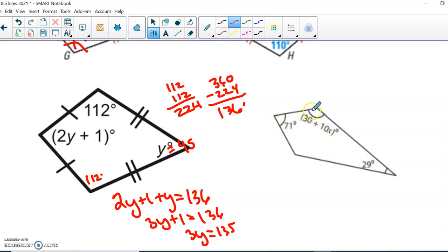All right. Over here, again, this angle is congruent to this angle, so I'm going to call this angle 30 plus 10x. And let's go ahead and add 71 and 29 together. Looks like that's 100.